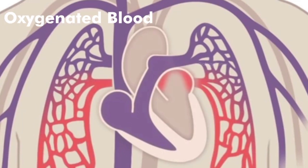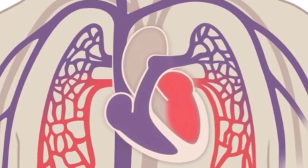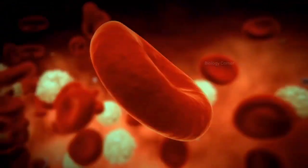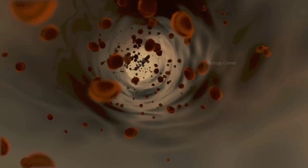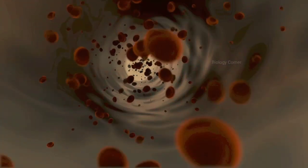This oxygenated blood is sent back to the heart. The blood vessels that carry blood to the heart are called veins. Oxygenated blood from the lungs is brought back to the heart through the pulmonary vein.